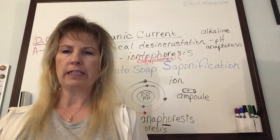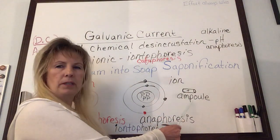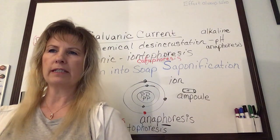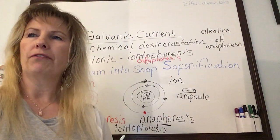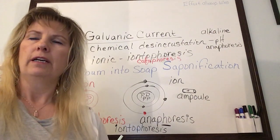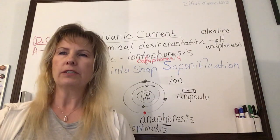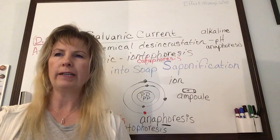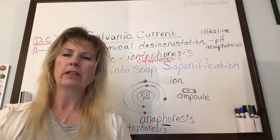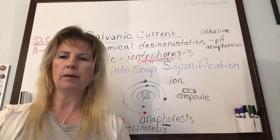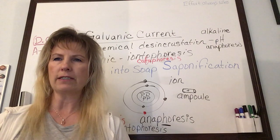You can make your own desincrustation solution by mixing baking soda with water. Most water-based serums come in an ampoule and are used for iontophoresis — also called cataphoresis when infusing water-soluble products. Desincrustation is great for oily or acne skin because it softens and relaxes the follicle and all the debris inside, making extractions much easier.